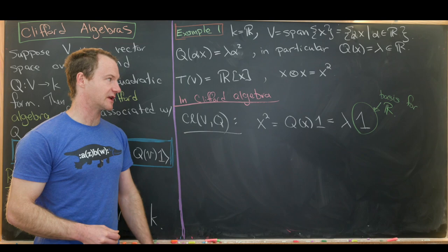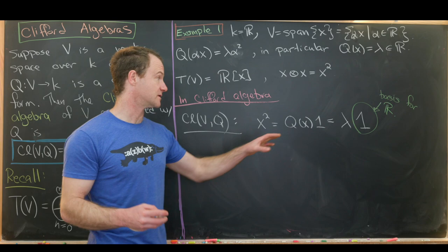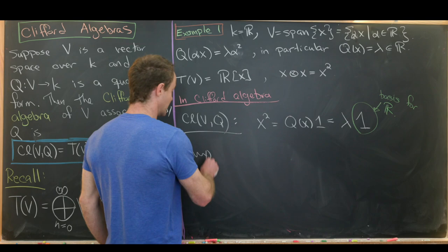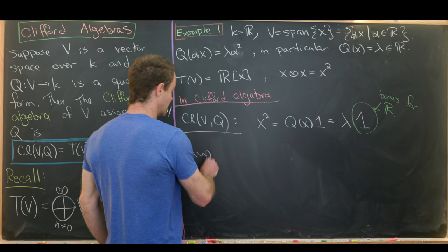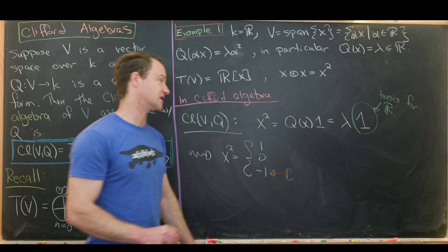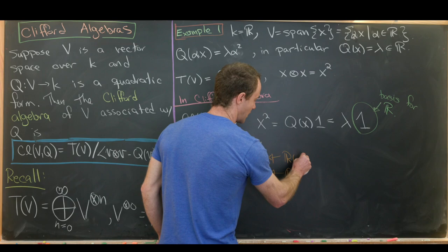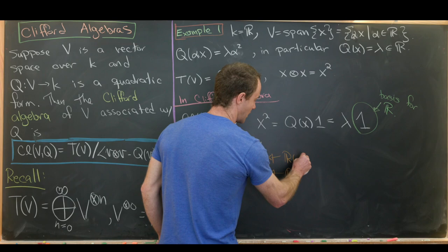Keeping that in mind, we can do a change of basis for our ground field to choose special values for λ. That will allow us to have the following possibilities: x² could be equal to 1, 0, or negative 1. These all have special names. If x² equals negative 1, we've reconstructed the complex numbers as a Clifford algebra over the real numbers. If x² equals 0, we've constructed something called the dual numbers. And if x² equals 1, that's sometimes called the split complex numbers.